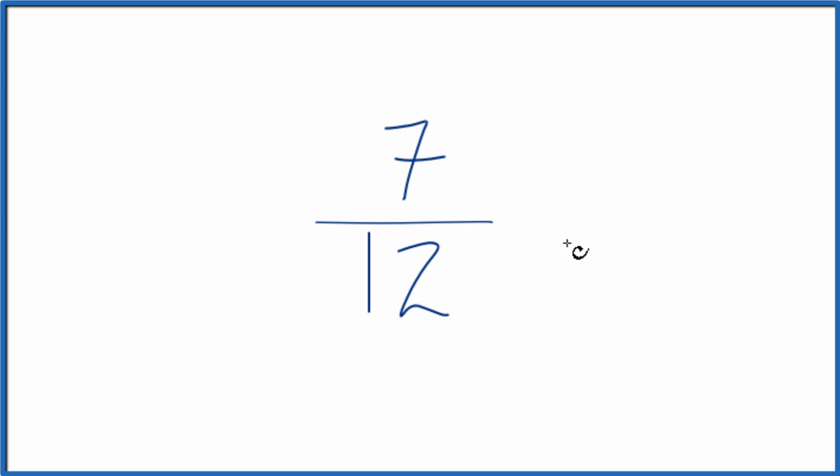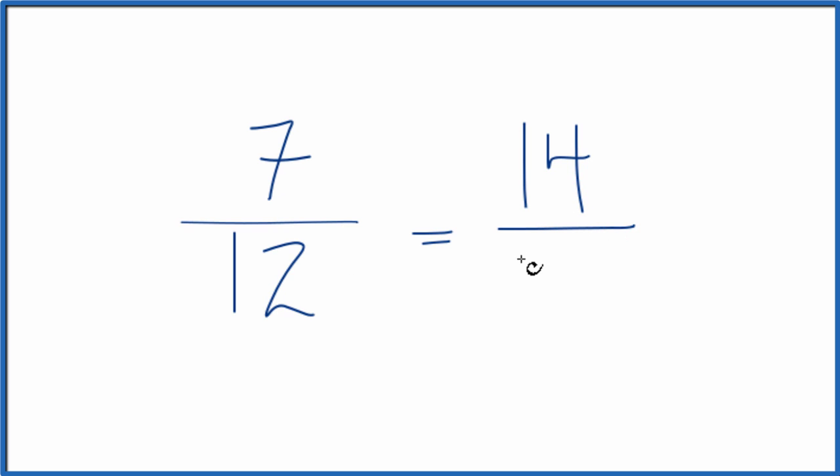To do that, we could double 7 and 12. 7 times 2 is 14, and 12 times 2 is 24. That's an equivalent fraction to 7/12. If you divide 14 by 24 or 7 by 12, you get the same decimal answer.